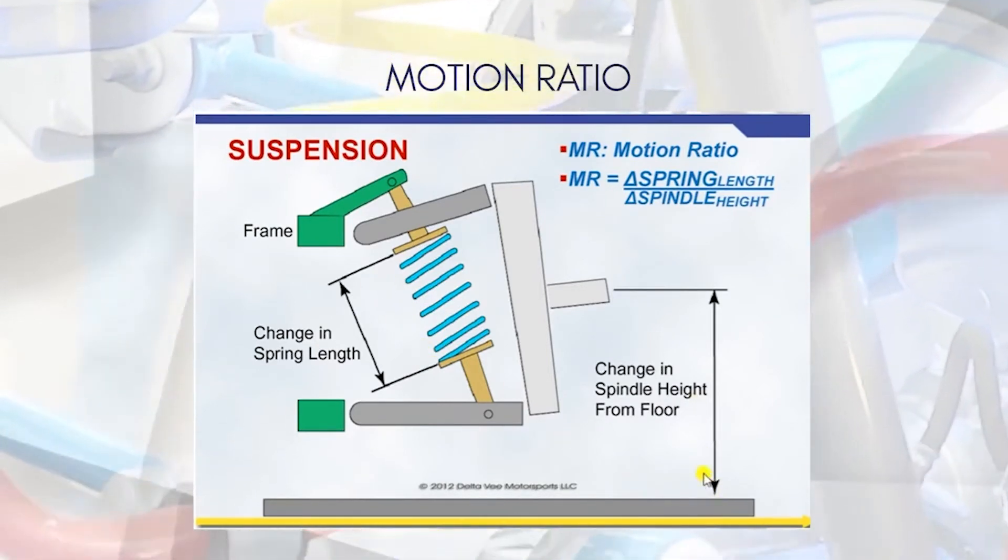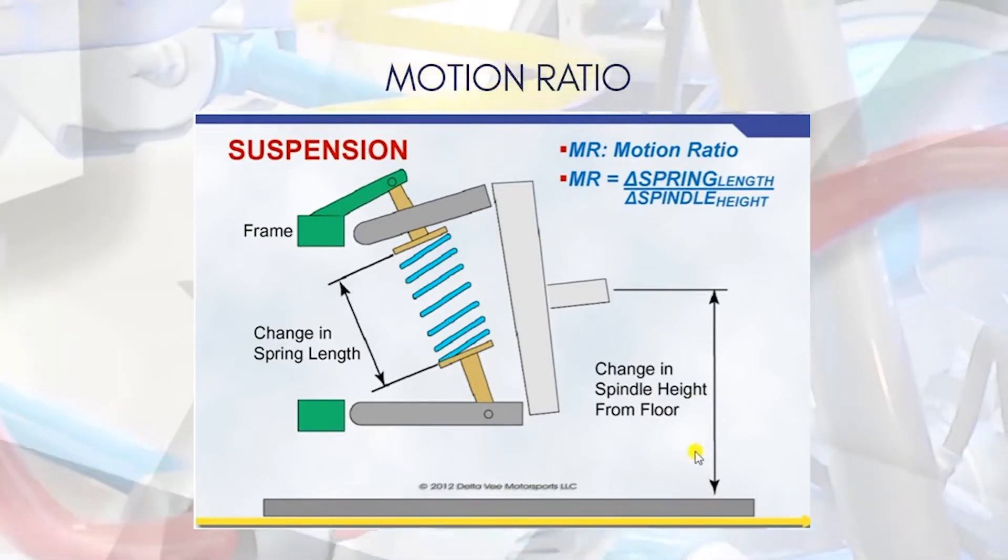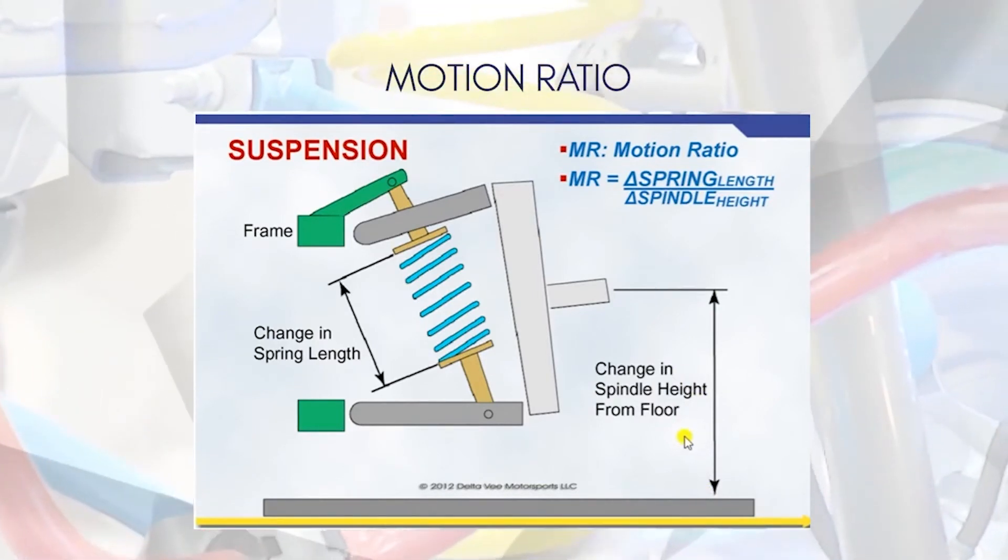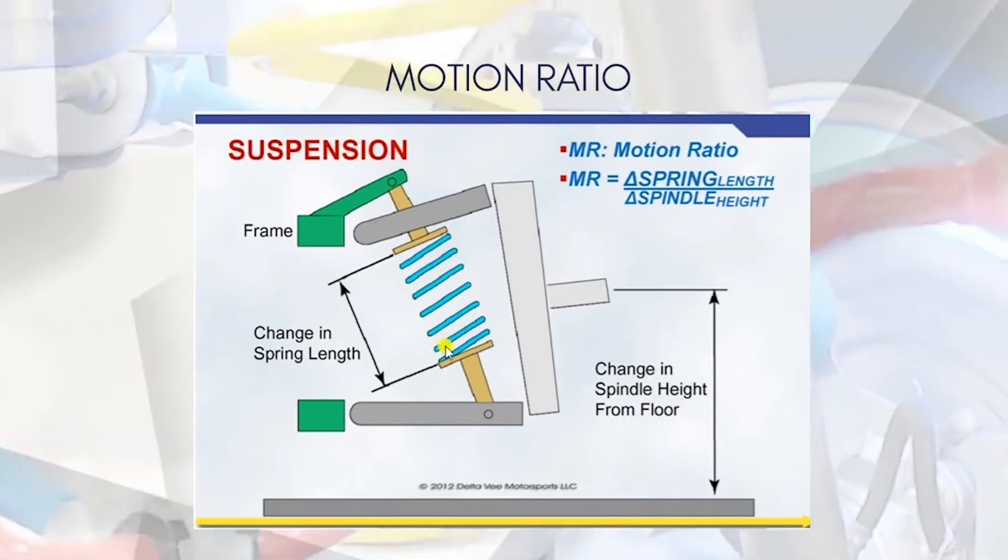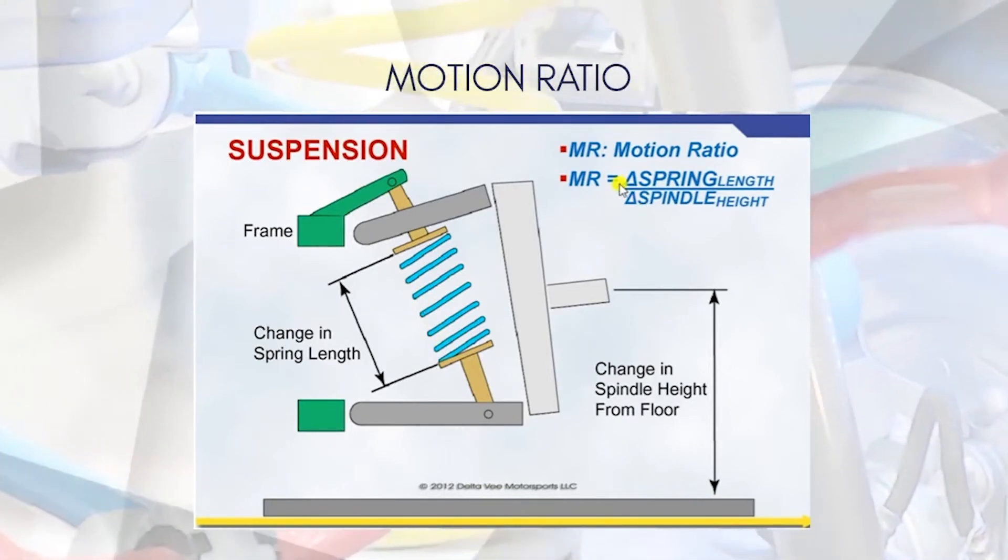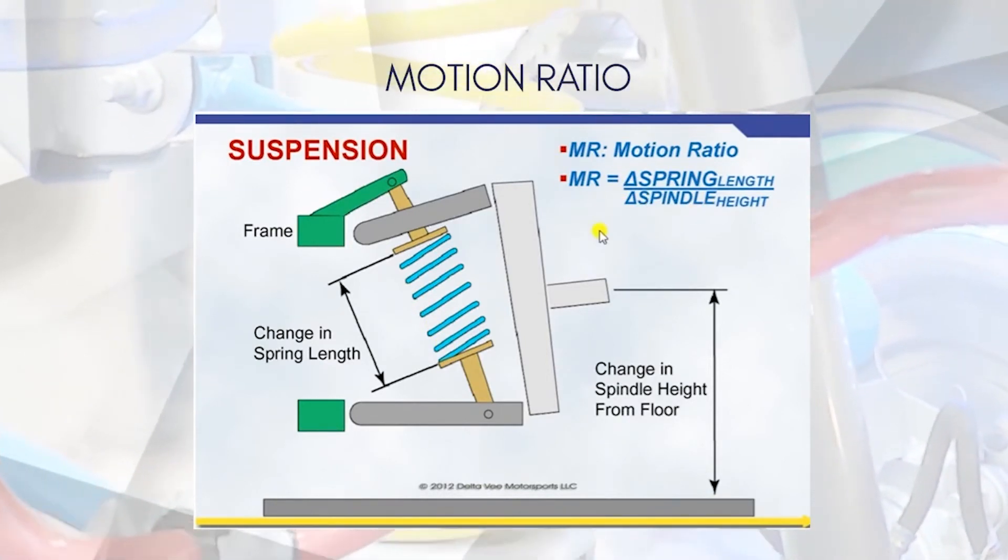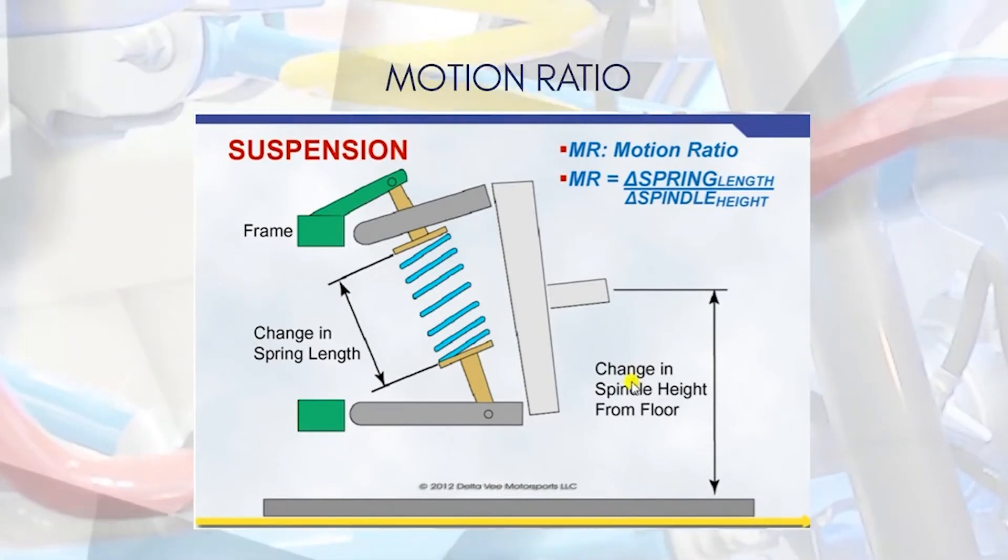If the wheel moves by one millimeter and your spring compresses by 0.7 millimeter, then your spring ratio is 0.7. But there is another way of finding the motion ratio.